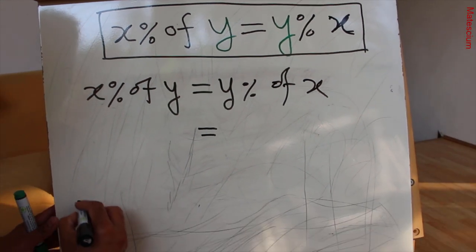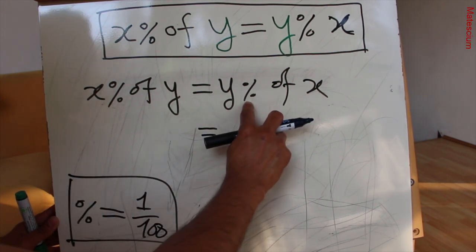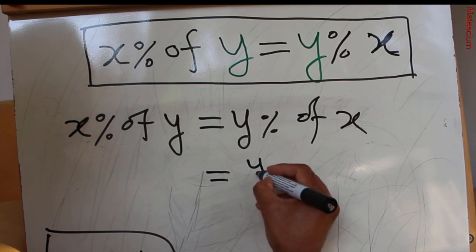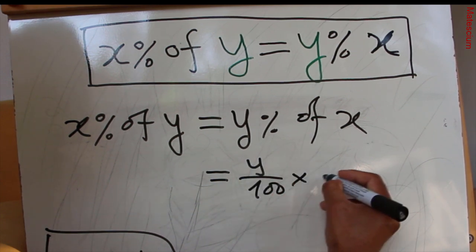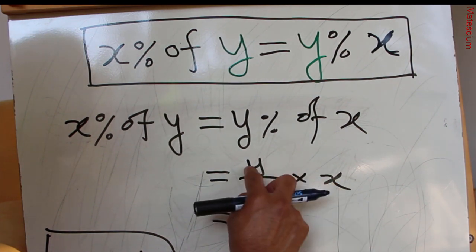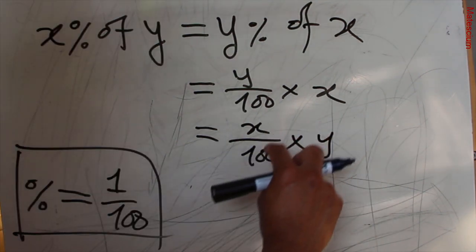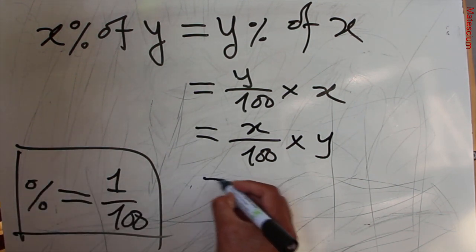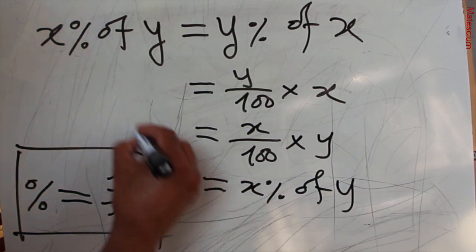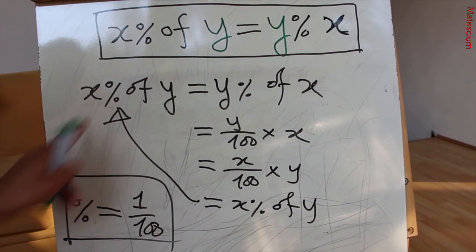As you know, percentage means 1 over 100. If we replace the percentage sign with 1 over 100, the expression becomes y over 100 times x. Since x and y can exchange their positions, this becomes x over 100 times y, which is x percent of y — that is the left-hand side. This is the real reason why x percent of y equals y percent of x.